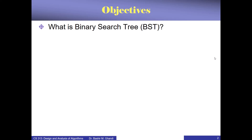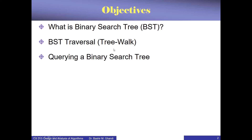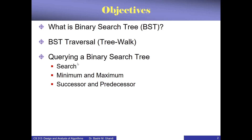In this particular lecture, these are the outlines. First we remind ourselves what is a binary search tree. Then what are the different types of ways to traverse a binary search tree — sometimes called tree walk. Then we look at querying methods: searching, finding minimum and maximum, finding the successor or predecessor of a node. And finally, we look at the modifying operations of insertion and deletion.